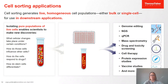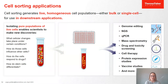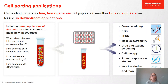Cell sorting generates live, homogenous cell populations, either in bulk into tubes or as single cells into microtiter plates for downstream applications. Isolating pure populations enables new discoveries quickly. Applications range from genome editing to cell therapy, protein expression studies, chromosome analysis, marine biology studies of phytoplankton, and identification of extracellular vesicles. The sky is the limit when it comes to applications for flow cytometry. You have to know your cell, know how it likes to be treated, and know what you're looking for before starting any flow cytometry experiment.